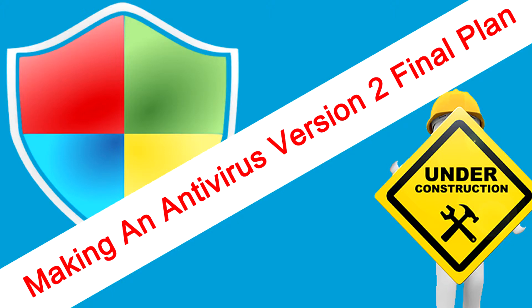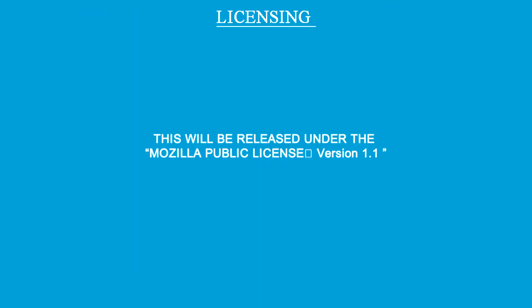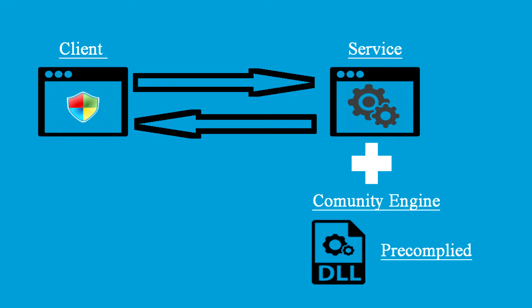It will include at least the basic features. We're going to cover the licensing agreement, the structure, and when we're going to start. First of all, let's talk about licensing. It will be released under the Mozilla Public License version 1.1, the same version as the first one went out under. So this is the plan we ended up going for.